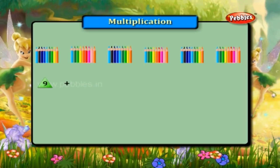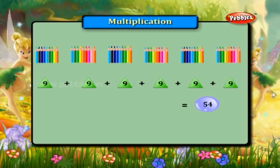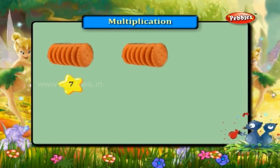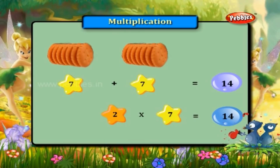Nine plus nine plus nine plus nine plus nine plus nine plus nine is equal to fifty-four. That is six into nine is equal to fifty-four. Seven plus seven is equal to fourteen; two into seven is equal to fourteen.